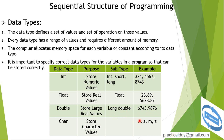Char stores character values such as a, m, z. To summarize: data type defines a set of values and set of operations on those values. Integer stores integer values, float stores real values, double stores large real values, and char stores character values. They each require different amounts of memory: integer takes two bytes, float takes two bytes, double takes four bytes, and char takes one byte.